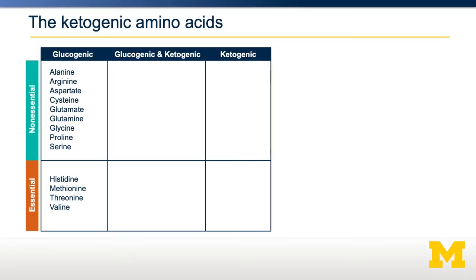That's about the biosynthesis of amino acids, but what happens when we break them down? Remember, amino acids are not only used to make proteins — they're also used for energy, and as we use them for energy, we need to break them down into catabolic products. In general, amino acids can be broken down into things that can become glucose — the glucogenic amino acids — and things that can become acetyl-CoA, and then eventually either a ketone body or a fatty acid. These are the ketogenic amino acids.